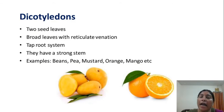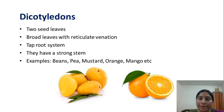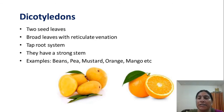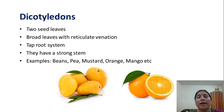In Dicotyledons, the unique feature is the presence of two cotyledons in the seed. Leaves are broad with reticulate venation. The taproot system is present and they have a strong stem. Examples of Dicots: mango, citrus, orange, mustard, pea plant.